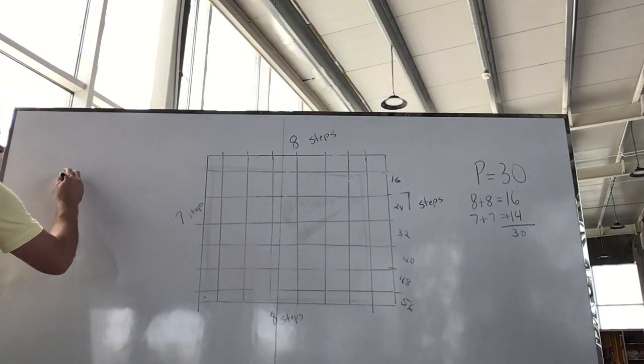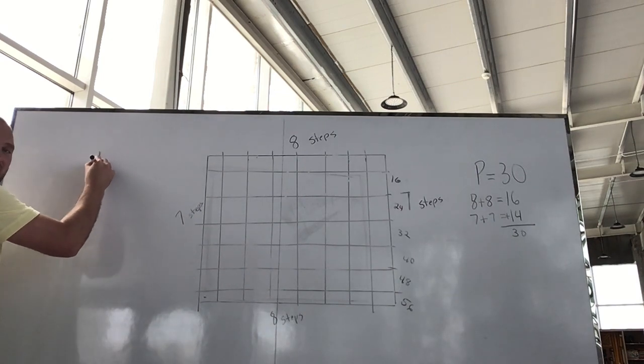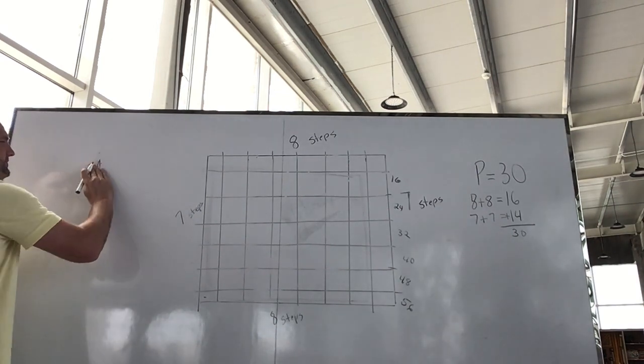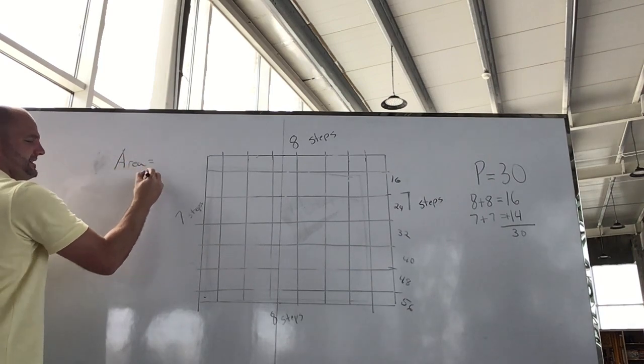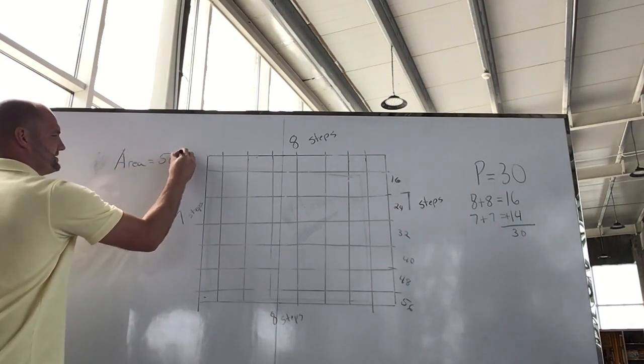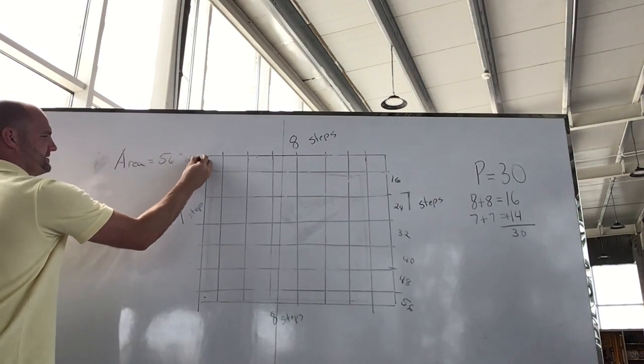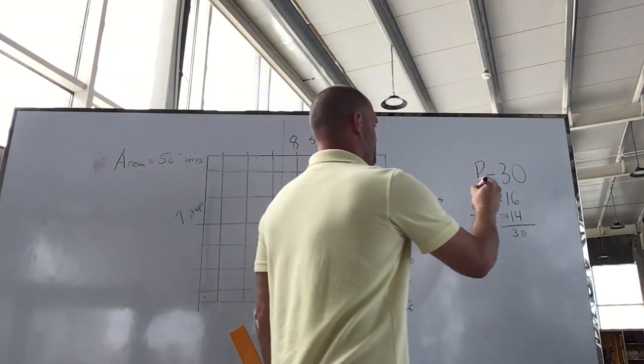56 squares, so that gives us our area. Our area is 56 square steps, and our perimeter is 30.